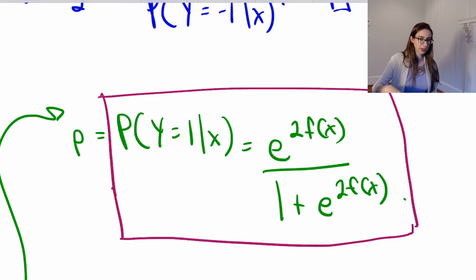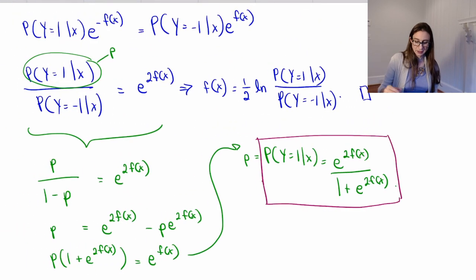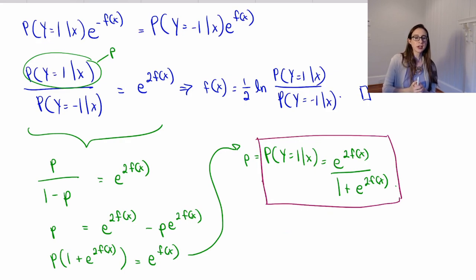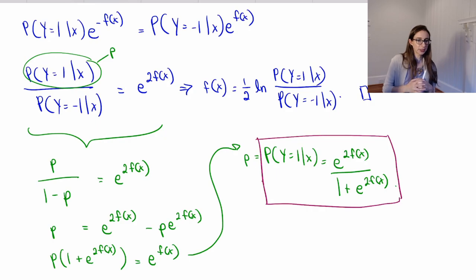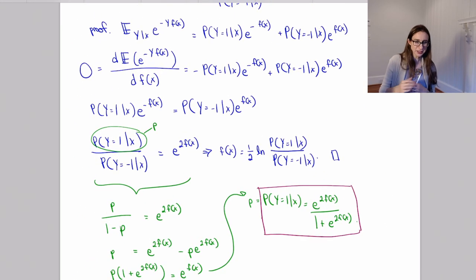This is helpful if you don't just want a hard classification of yes or no, but you want the probability of failure, or the probability of spam, or the probability of discovering oil, depending on your application. It's always useful to have a probabilistic interpretation sometimes.